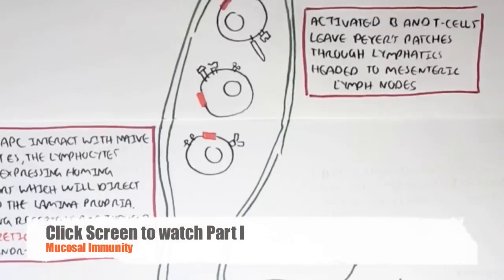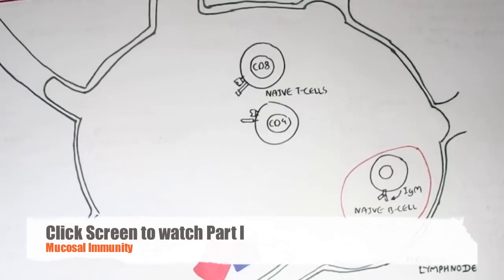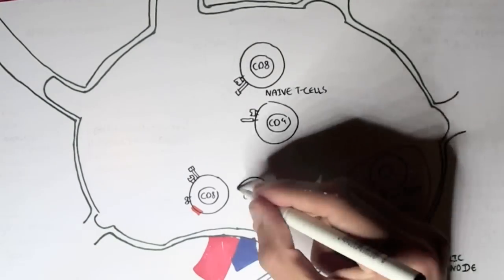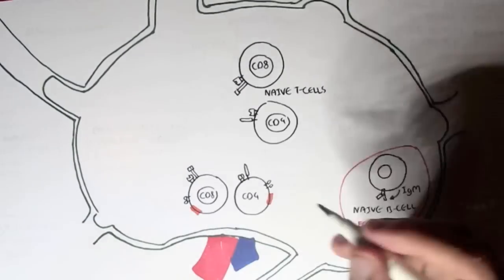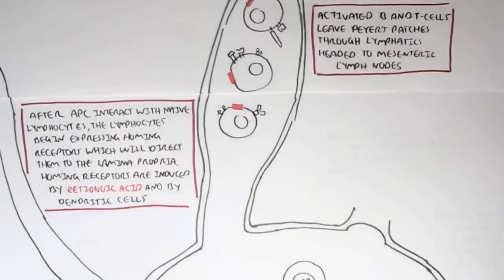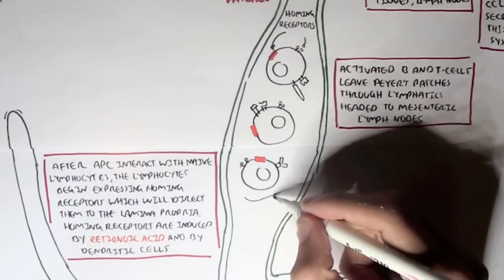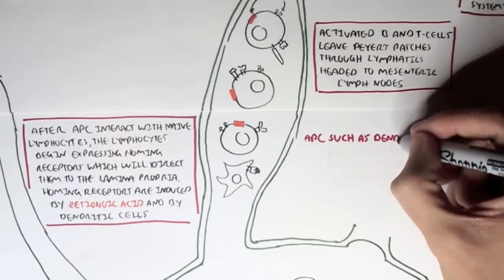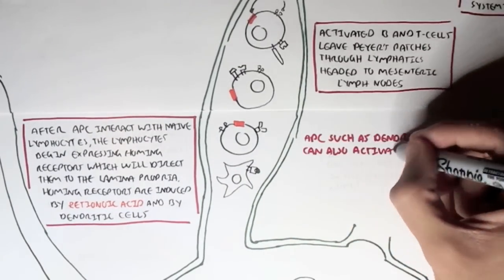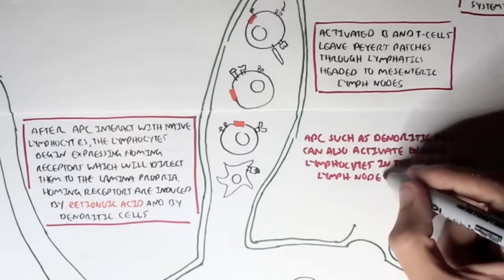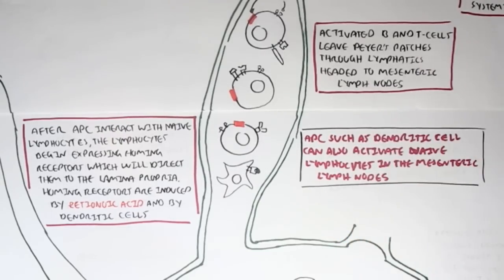Here the activated CD8 and CD4 cells are in the mesenteric lymph nodes, travelling from the Peyer's patches, as well as the activated B cell. Now if the antigen presenting cell, the dendritic cell, didn't activate the naive lymphocytes within the Peyer's patches, it can then leave the Peyer's patches with the antigen on the major histocompatibility complex and also activate naive lymphocytes within the mesenteric lymph nodes.